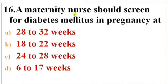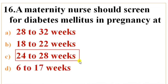Next question: A maternity nurse should screen for diabetes mellitus in pregnancy at — Options: A) 28 to 32 weeks, B) 18 to 22 weeks, C) 24 to 28 weeks, D) 6 to 17 weeks. Answer is C — 24 to 28 weeks. Gestational diabetes mellitus (GDM) usually presents late in the second trimester or during the third trimester, so screening is performed between 24 to 28 weeks of pregnancy using a 50-gram oral glucose challenge.